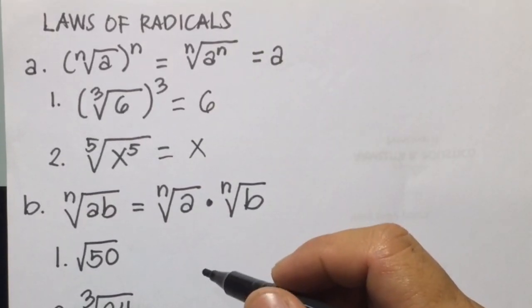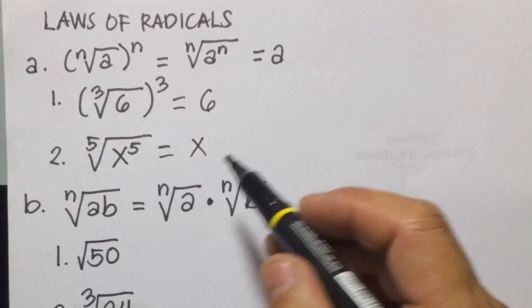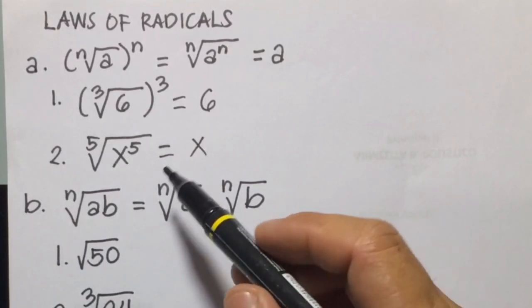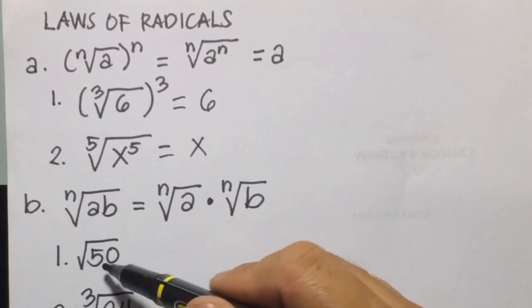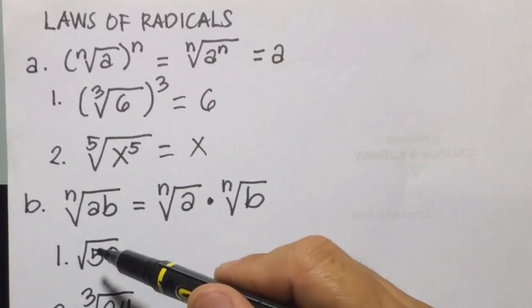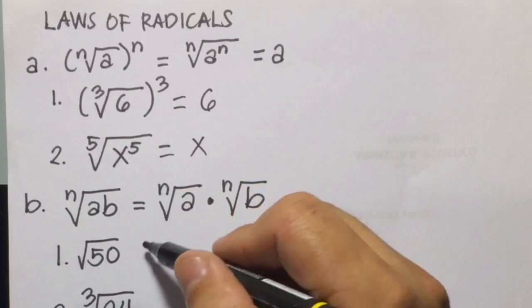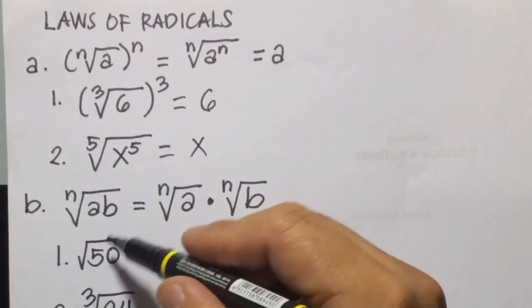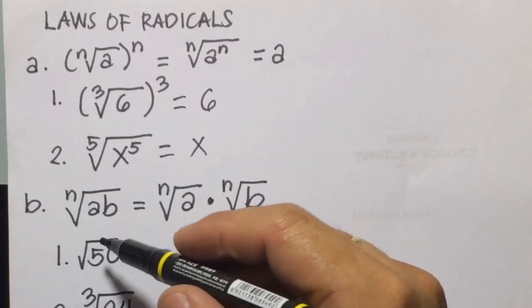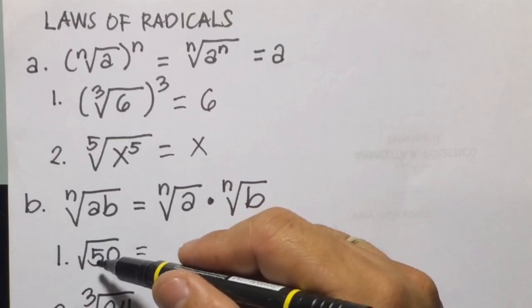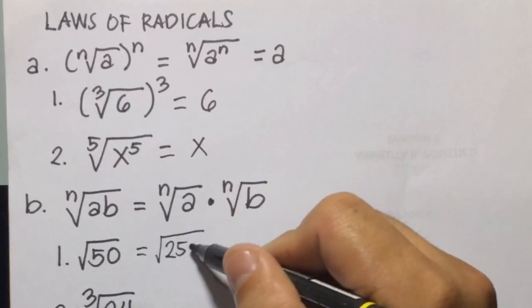Second law: the nth root of a times b is equal to the nth root of a times the nth root of b. What we're going to do is find the factors of the radical. For example, square root of 50 — we find the factors of 50 where one of the factors is a perfect square, so that would be 25 times 2.